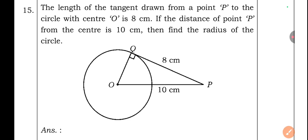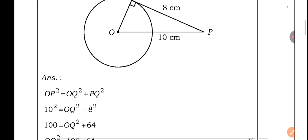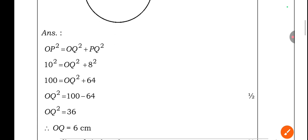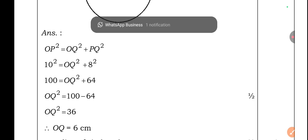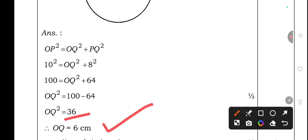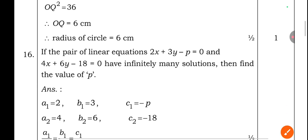Question 15: The length of a tangent drawn from point P to a circle with center O is 8 cm. If the distance of point P from the center is 10 cm, find the radius. Using Pythagoras: OP² = OQ² + PQ², so 10² = OQ² + 8², giving 100 = OQ² + 64, thus OQ² = 36, so the radius OQ = 6 centimeters.